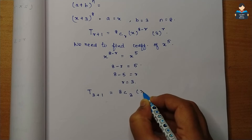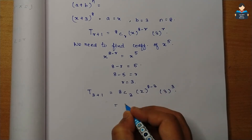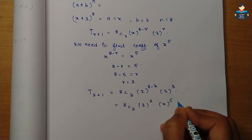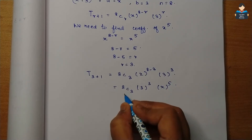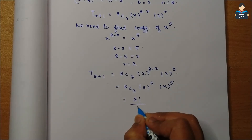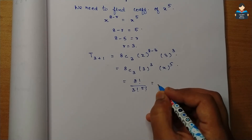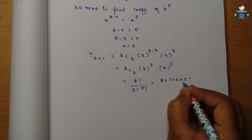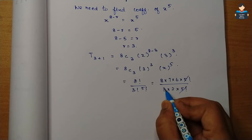With r = 3, the term becomes 8C3 · x to the power (8−3) · 3 to the power 3, which is 8C3 · x⁵ · 27. So the coefficient of x⁵ is 8C3 × 27. Now solving 8C3: that is 8 factorial divided by 3 factorial into 5 factorial, which equals 8×7×6×5! divided by 3×2×1×5 factorial. The 5 factorials cancel.